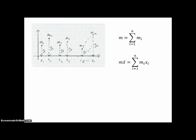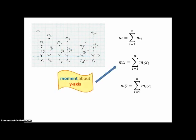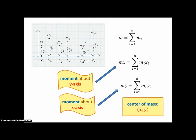If we include a position for the mass that also has a y-coordinate, the same idea applies to y. The total mass times the average y-position equals the sum of all the individual masses times the individual y-positions. The total mass times the average x-value is called the moment about the y-axis, and m·ȳ is called the moment about the x-axis. The center of mass is (x-bar, y-bar), and if we have constant density, that is also the centroid.